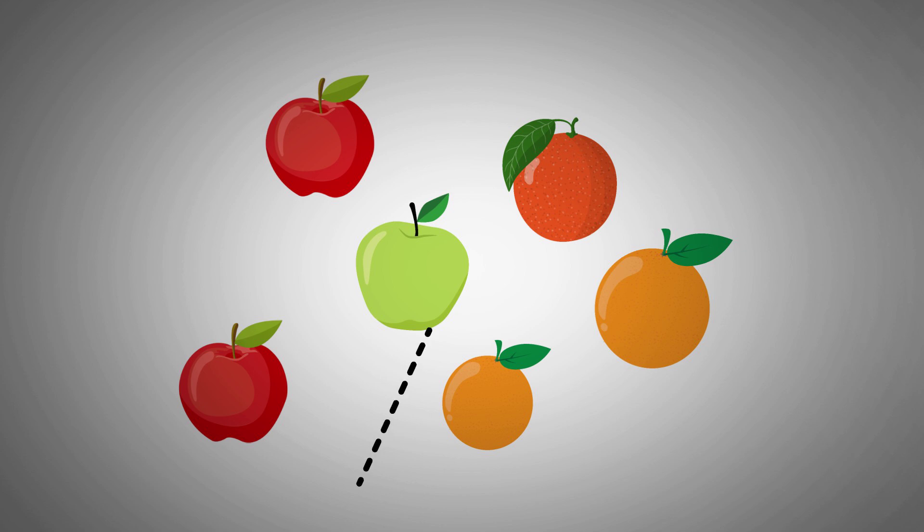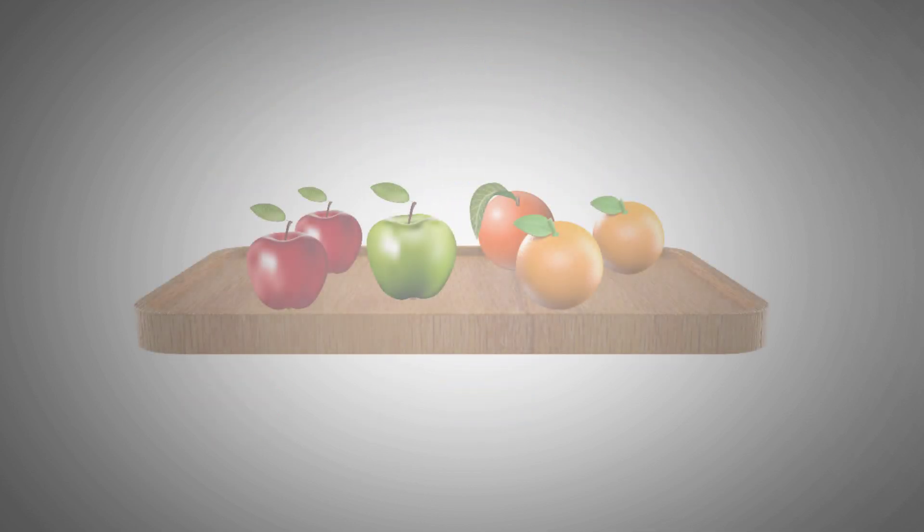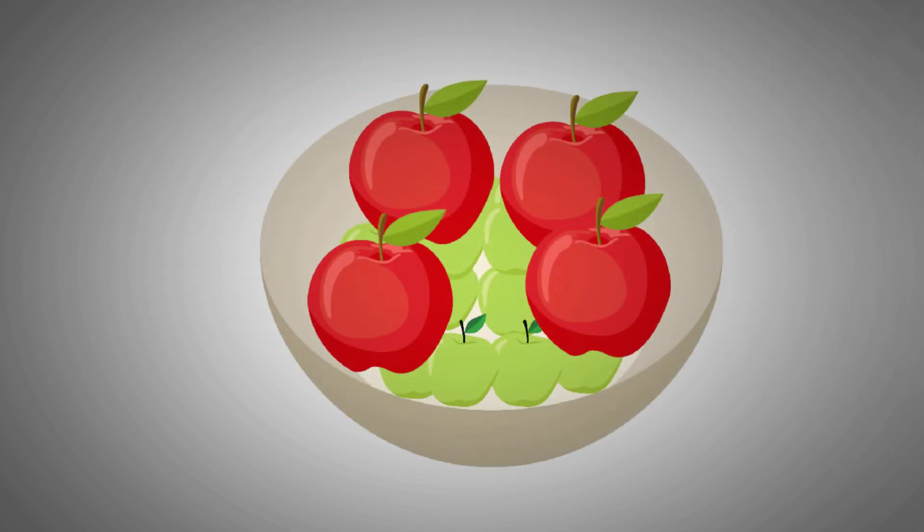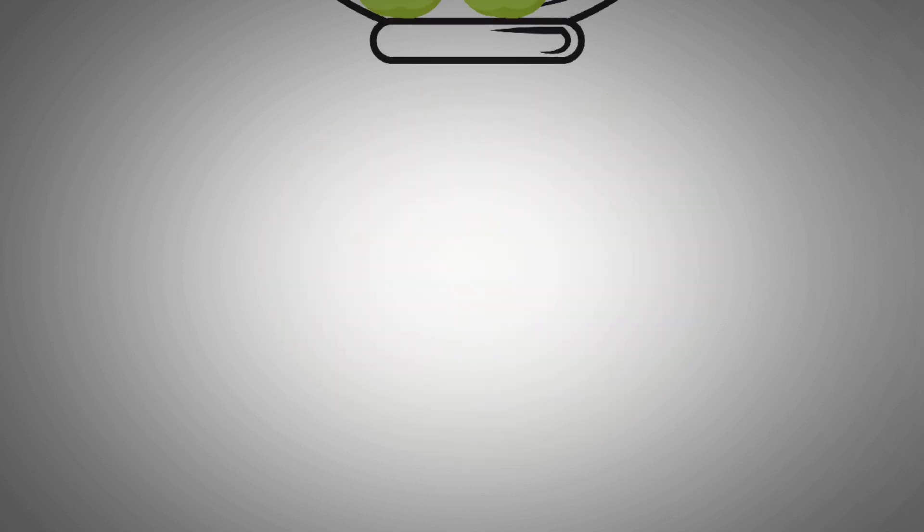Here's where the SVM gets fancy. It uses something called a kernel trick. Simplistically, this trick involves transforming the data into a higher-dimensional space, where it becomes easier to separate with a straight line. Imagine you're sorting colored balls on a flat table. They're all mixed up in such a way that no straight line can separate them perfectly. Now imagine lifting the table's surface into a bowl shape.